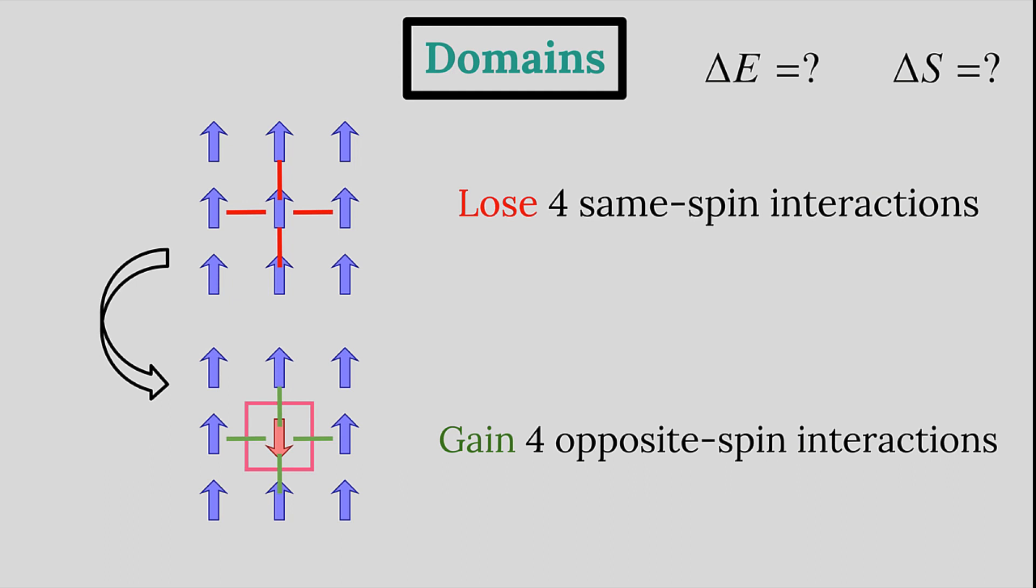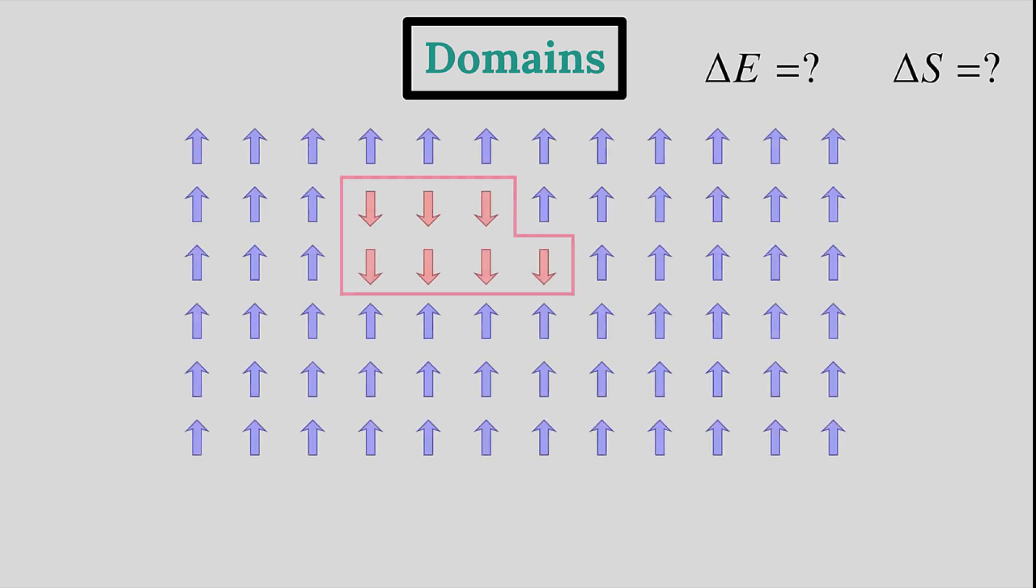We're going to measure the perimeter of a domain in lattice spacings. So for example, this single spin domain has a perimeter of four. We can see that for every unit length of the perimeter of the domain boundary, we replace one same spin interaction with an opposite spin interaction. If you're having trouble understanding why this is true, think about what happens inside the created domain.